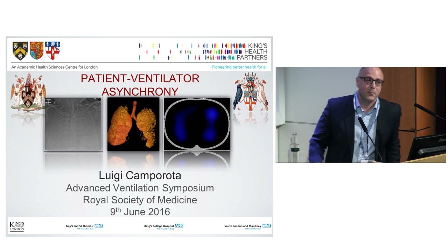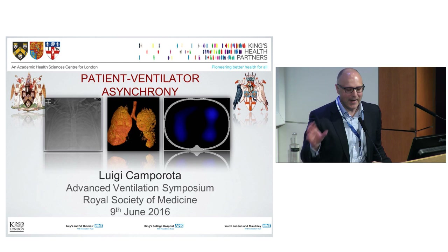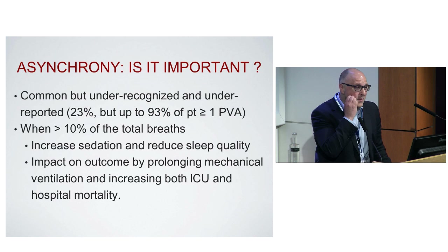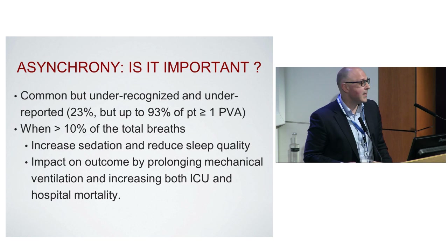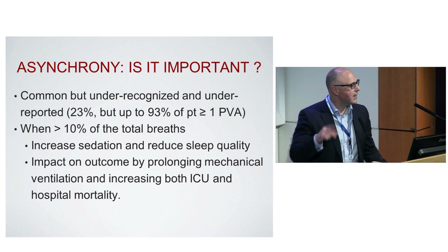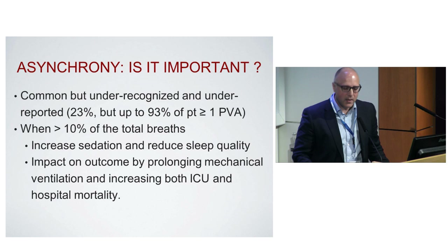The question is why is that important? We know it's common, and the more we look at it, the more common it becomes. Obviously if we don't look at the ventilator and don't look at the patient, we'll never discover them. But what the literature says is about 23% up to 93% of patients have one or more patient-ventilator asynchrony. And if we divide the number of asynchronies by the number of breaths, and if more than 10%, then it's got consequences.